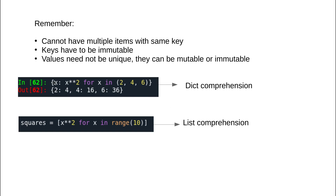One common way to create a dictionary or list in Python is using comprehension. This technique is called dictionary comprehension for dictionaries and list comprehension for lists. For a dictionary: {x: x**2 for x in [2, 4, 6]} creates key-value pairs where x is the key and x squared is the value — giving {2:4, 4:16, 6:36}. For a list: [x**2 for x in range(10)] creates a list of squares of numbers from 0 to 9.